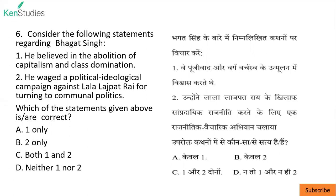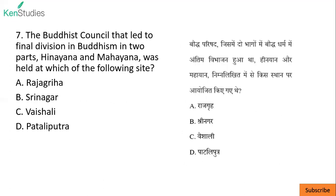He waged a political ideological campaign against Lala Lajpat Rai for turning to communal politics — yani Lala Lajpat Rai ke khilaaf sampradaik rajniti karne ke liye ek rajnitik vaicharik abhiyan chalaya. In fact, unhone lekh likha tha 'Why I Am an Atheist' — jisme unhone bataya ki dharm mein mera vishwas nahi, mera mukh target hai Bharat ko azadi dilana aur sab ko adhikar milna. So options one and two — answer C.